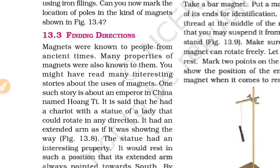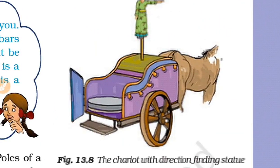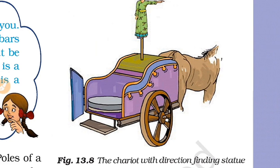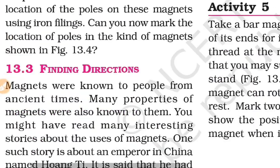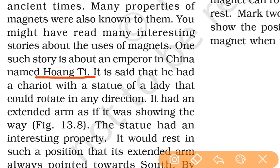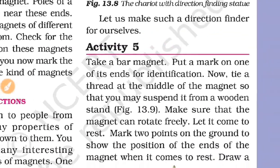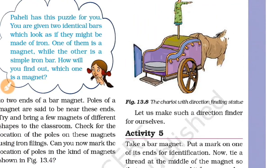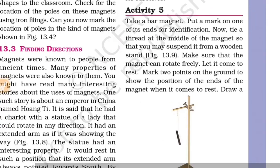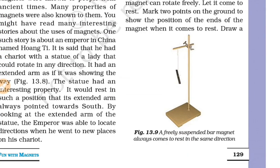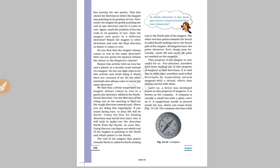The direction is important when using a magnet. There is a Chinese traveler who used magnets for travel — looking for the correct direction. They would look for the North side. The correct technique involves rotating to the right direction, using the left arm and rotating to the correct position.